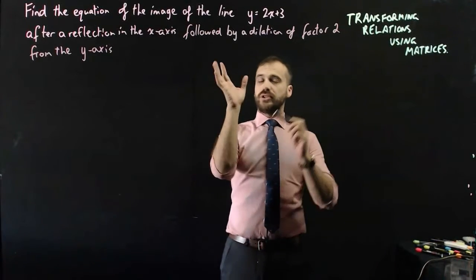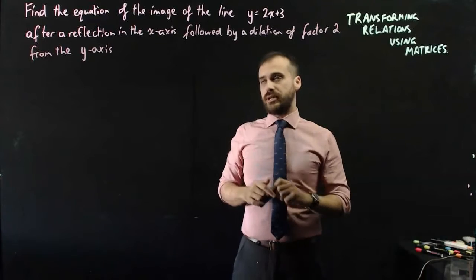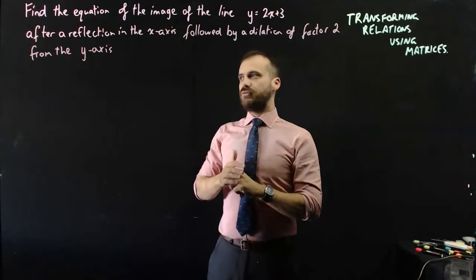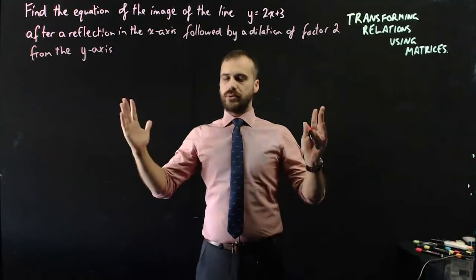Find the equation of the image of the line y equals 2x plus 3 after a reflection in the x-axis followed by a dilation of factor 2 from the y-axis.